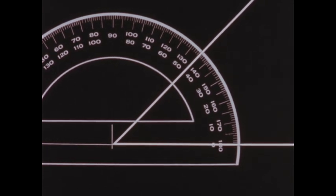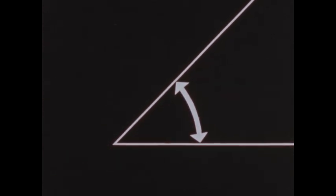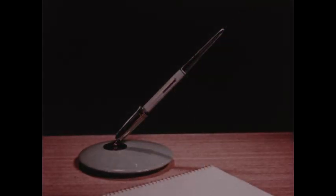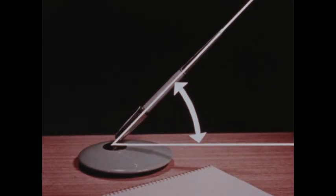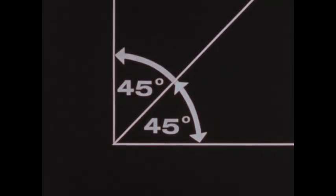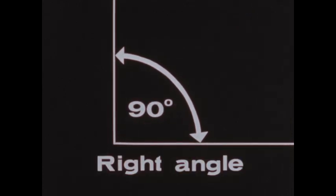Our angle still measures 45 degrees. Any angle that measures less than 90 degrees is called an acute angle, and it is sharp or pointed in appearance. If we increase our 45-degree angle another 45 degrees, we have an angle of 90 degrees — a right angle.